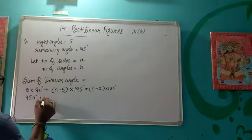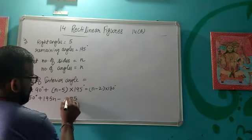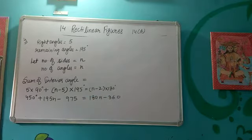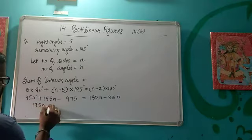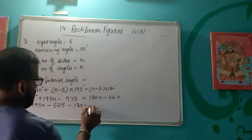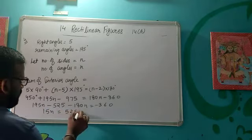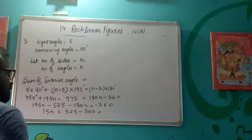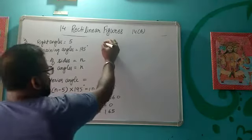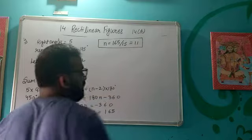Solving: 450 + 195(n−5) = 180(n−2), which gives 450 + 195n − 975 = 180n − 360. So 195n − 525 = 180n − 360, giving 15n = 165, so n = 165/15 = 11. There are eleven sides in that polygon.